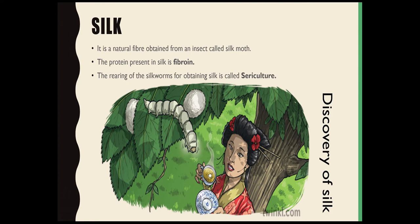One day she was having a hot cup of tea in her garden under the mulberry tree. Accidentally, a cocoon fell into her hot cup of tea and the delicate threads of that cocoon started opening up. She picked up the cocoon and took the silk threads and started wrapping them around her fingers.